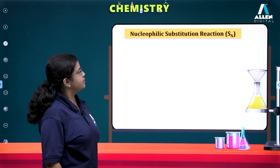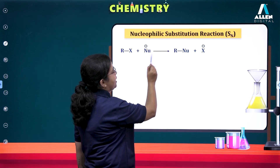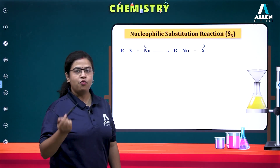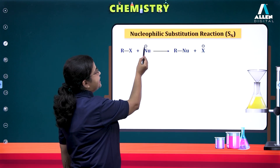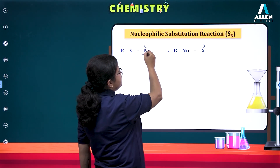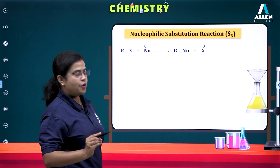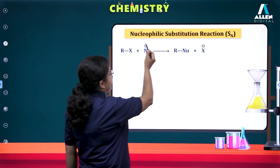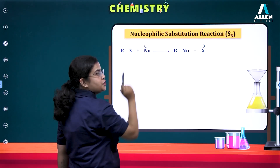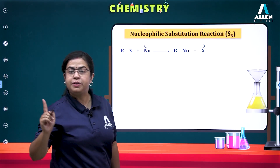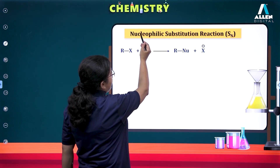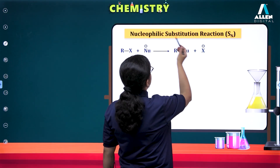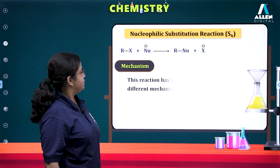The general reaction is: RX + Nu⁻ → RNu + X⁻. Nu⁻ is the nucleophile, which acts as the attacking species. When the attacking species is a nucleophile, it is called nucleophilic. X is being replaced by Nu — that is a substitution brought about by an electron-rich species, which is the nucleophile. Hence this is called a nucleophilic substitution reaction.